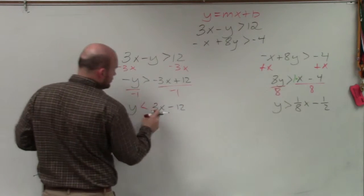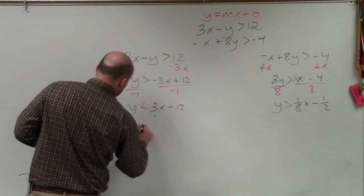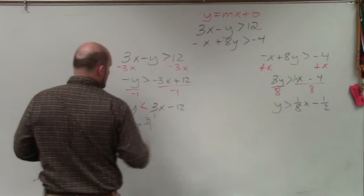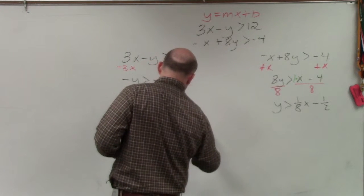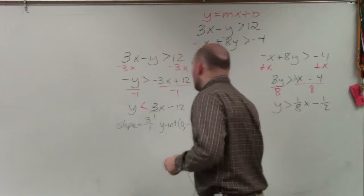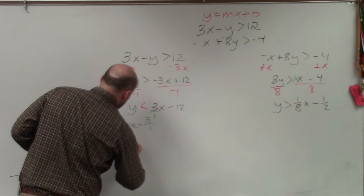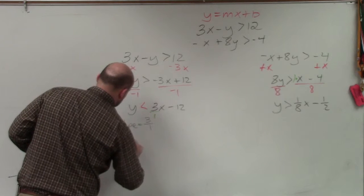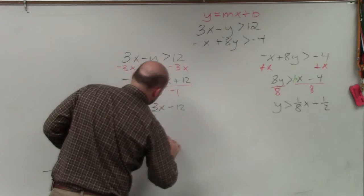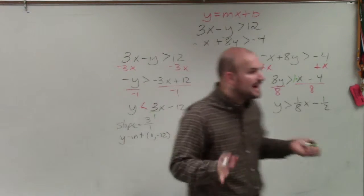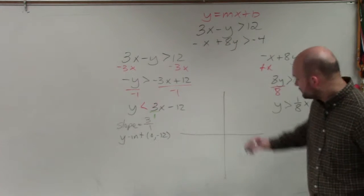So my slope is my coefficient of my variable. But remember, we always want to write our slope as a fraction. So if you don't have your slope as a fraction, put it over 1. So I'll write my slope is positive 3 over 1. And my y-intercept, I always like to write as a coordinate point. Why do I like to write my y-intercept as a coordinate point? Because it is a point.